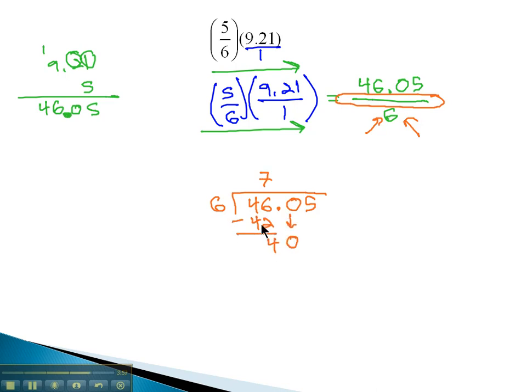6 goes into 40, 6 times, because 6 times 6 is 36. Subtracting gives us a 4. Bring down the 5. 6 goes into 45, 7 times, because 6 times 7 is 42.